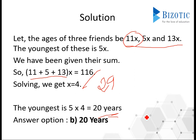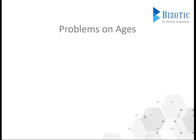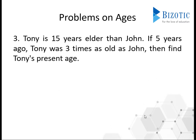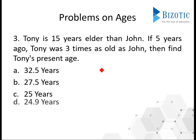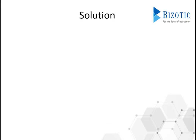I hope you are clear with this. Now let's move on to the next problem. Tony is 15 years elder than John. If 5 years ago Tony was 3 times as old as John, then find Tony's present age. Let's look into the solution step by step. In order to calculate Tony's age, we need John's age. So let's consider John's age as y.